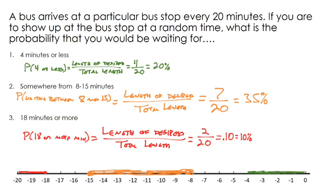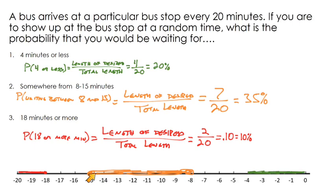With a problem like this we're dealing with continuous data — time is continuous. It doesn't really matter if you say 'between 8 and 15' or if you're inclusive of 8 and 15. The probability difference between negative 14.999999 and negative 15 is negligible, so it doesn't change our answer. Don't get bogged down on open or closed circles in a situation like this. Just go back to your basics: length of your desired segment over the total length.